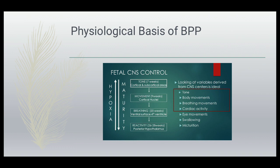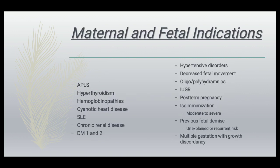Tone develops at 7 weeks, with cortical and subcortical areas getting developed. Movements develop at 9 weeks, coordinated by cortical nuclei. Breathing develops by 20 weeks, associated with the fourth ventricle. Reactivity is developed at 26 to 28 weeks in the posterior hypothalamus. The variables derived from CNS centers — tone, body movements, breathing movements, cardiac activity, eye movements, swallowing, and micturation — are all affected by hypoxia.